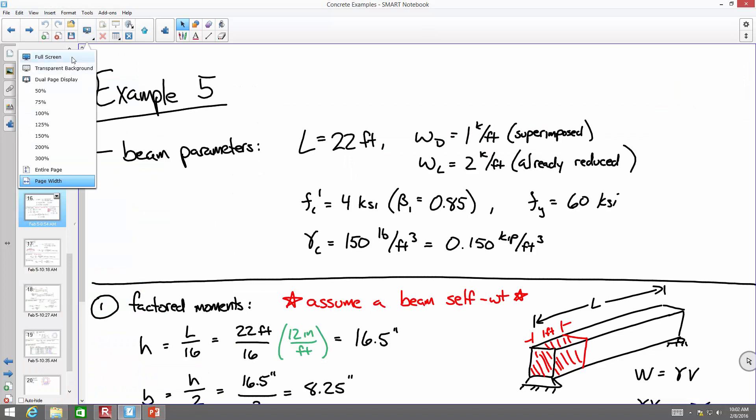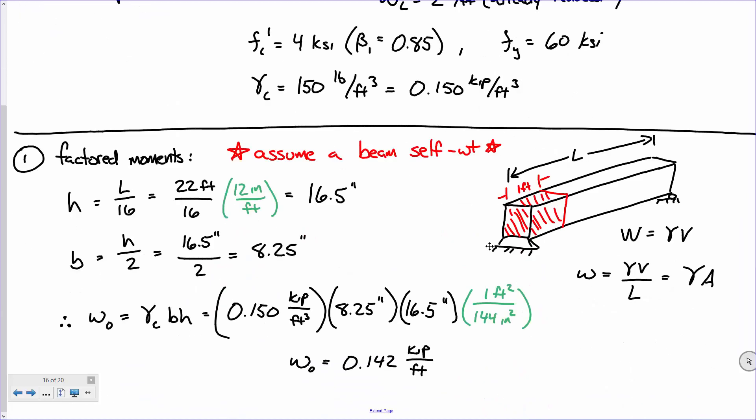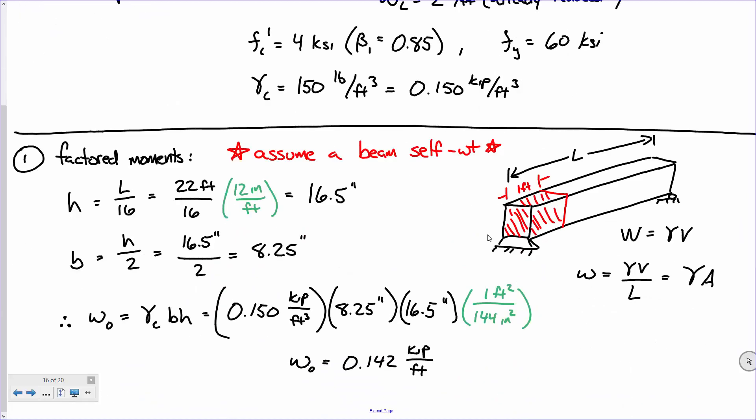We did a lot of this work last time, so a lot of this we don't have to go through in very significant detail. But I at least want to recap and make sure everybody's on the same page. I listed our beam parameters. The reason I'm walking through this is because I want to make some observations about what we assumed, so that we realize we have to go back and verify our assumptions. One of those assumptions was the self-weight of the beam. We assumed about 8 inches wide by 16½ inches deep, but our trial section ended up being a lot bigger — so that's going to change our weight and ultimately our moments. That's where some iteration might come into play.